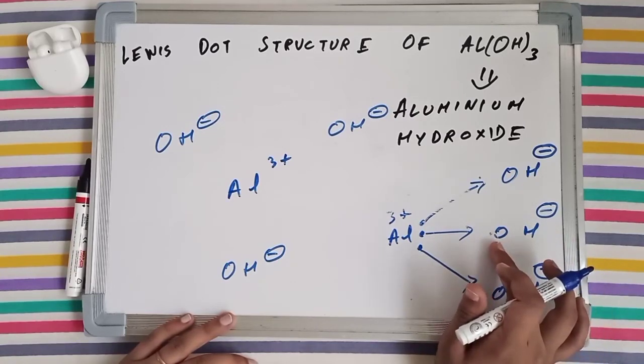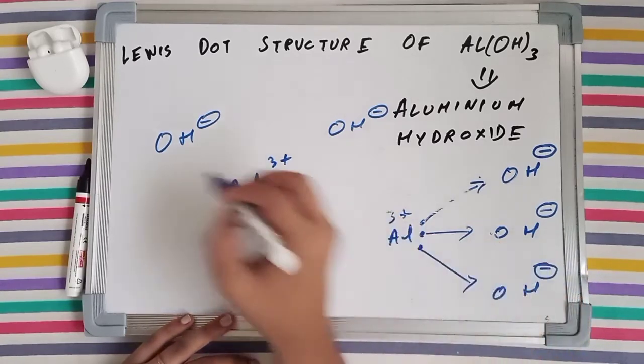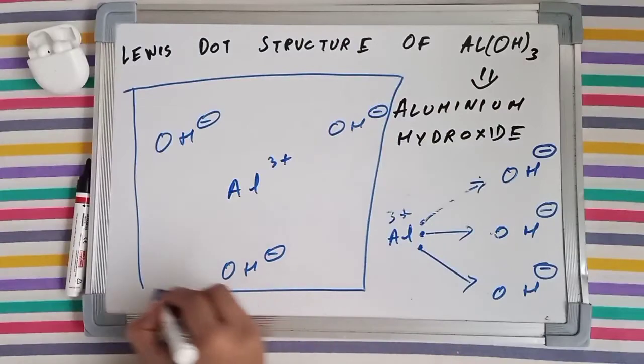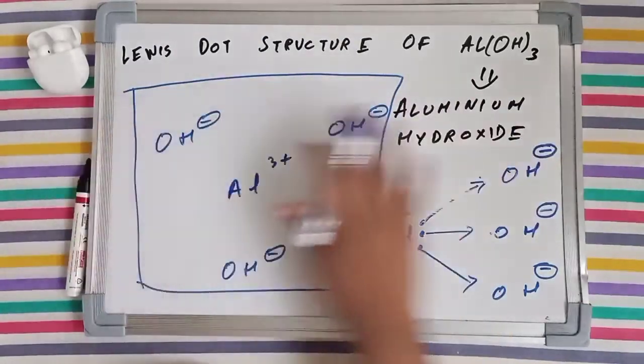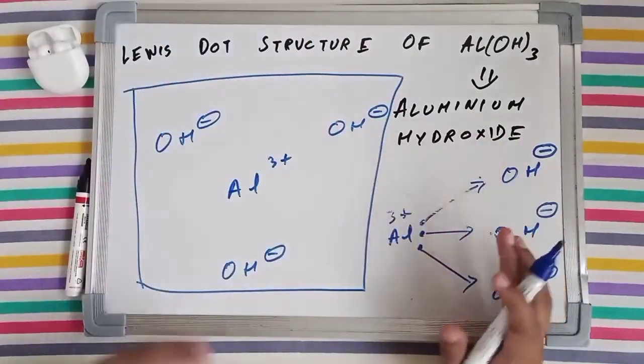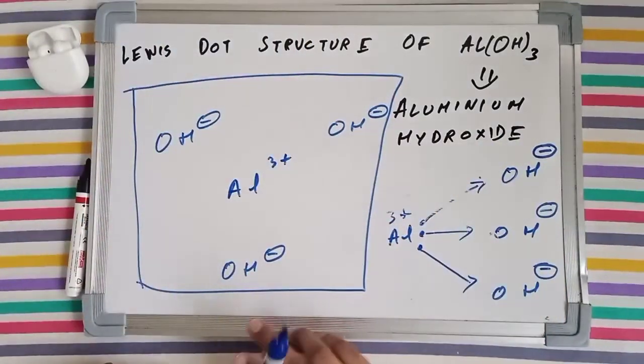So the negative charge is specifically for oxygen. This is a lattice of Al(OH)3 and it will grow in all the 3 dimensions - in X, in Y, and in Z. All the 3 axes and they will make a crystal lattice.